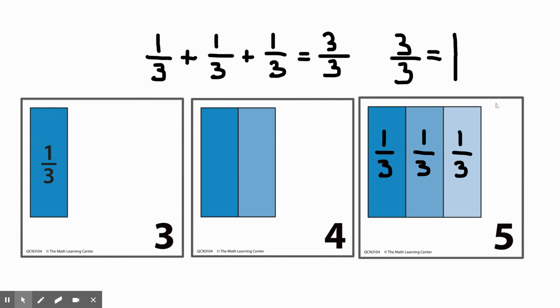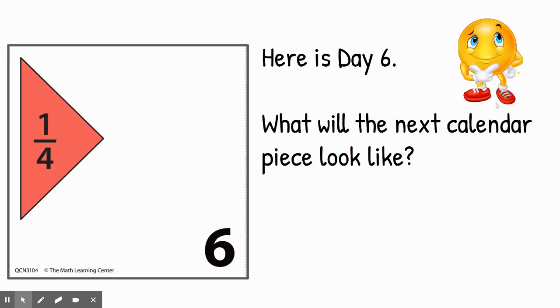We could write an equation that says one-third and one-third and one-third is equal to or has the same value as three-thirds. And then we can also say that three-thirds is equal to one.